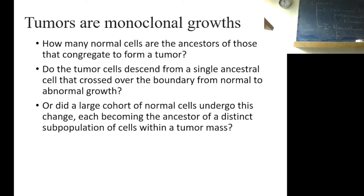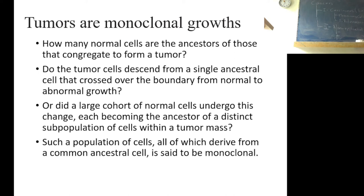The tumors are usually not homogeneous. There are different cells with different genotypes in a tumor. So is that because of different origins, or are they originated from the same cell but during the time they acquire different mutations? Monoclonal or polyclonal? The question is this. Such a population of cells, all of which derive from common ancestral cell, is said to be monoclonal. The answer is, tumors are monoclonal.